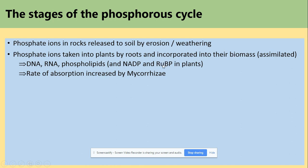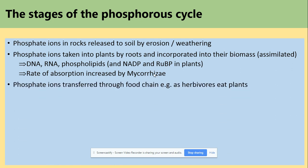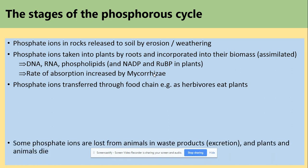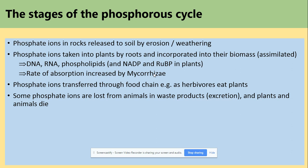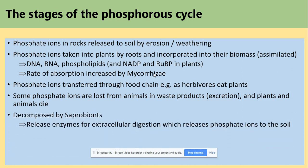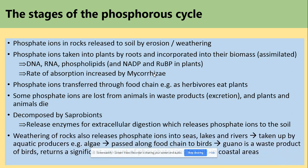The rate of absorption will be increased by mycorrhiza, which we looked at in our previous video on the nitrogen cycle. The phosphate ions will be transferred through the food chains, and some phosphate ions will be lost from animals in waste products. These will be decomposed by saprobionts, which release enzymes for extracellular digestion, releasing phosphate ions to the soil. Weathering of rocks also releases phosphate ions into seas, lakes, and rivers.